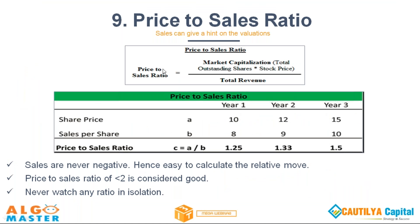Price to sales is an important parameter because sales can never be negative. A price-to-sales ratio of less than 2 is always considered good. Remember — never watch any ratio in isolation. Scoring 99 in maths and 25 in English doesn't mean you're a topper. You need to check all the subjects. A good company is one that performs well across all parameters.